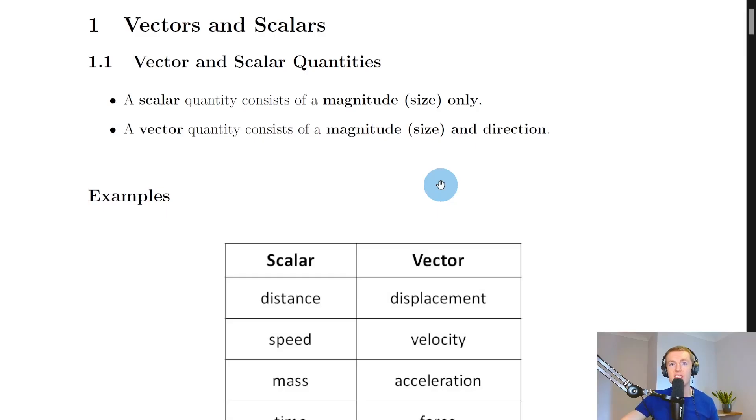So we'll start by looking at the definition for a scalar quantity and for a vector quantity, and then we'll look at some examples of each.